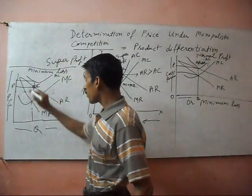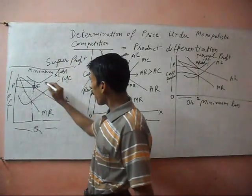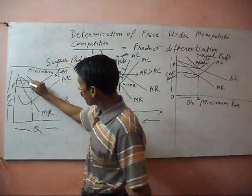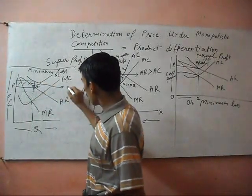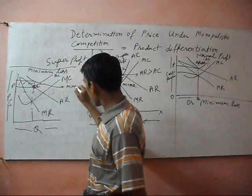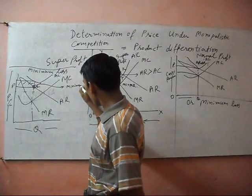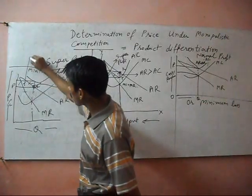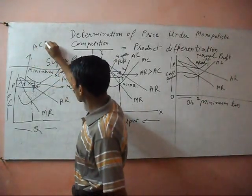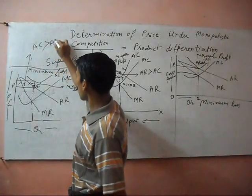Price is fixed at this point. At that time, this is the minimum loss because at this point average cost is more than average revenue.